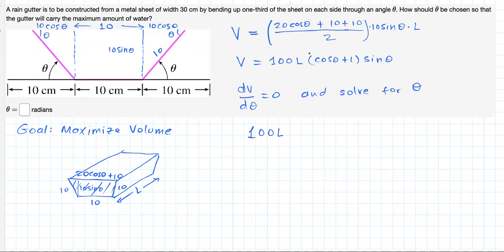100L. We're going to focus on taking the derivative of this part. I'm going to call this F. I'm going to call this G. I'm going to use the product rule to get the derivative of this part.